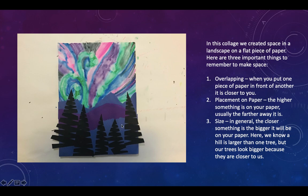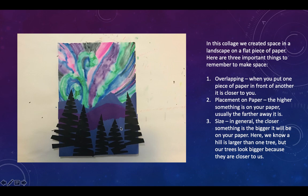The bottom blue hill overlaps the purple — this blue hill is in front of the purple hill. Placement on your paper can also show space. Usually the higher something is on your paper, the further away it is. So this back blue mountain is higher up on the paper than the front blue mountain. In this case the trees are higher than the mountain, so it's not always the case, but often it is.